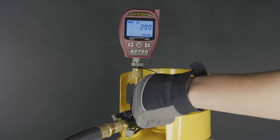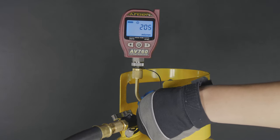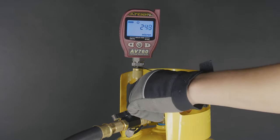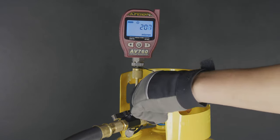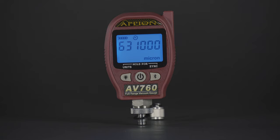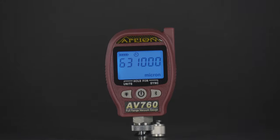Finally, perform an isolation test to ensure the gauge can hold a vacuum properly. Refer to our isolation test video for the step-by-step process. If you experience any issues with your AV760 or cleaning process, don't hesitate to contact Appion directly.